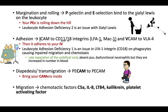That's for margination and rolling. Your pee is for P-selectin and E-selectin. So the P and E selectins bind to sialyl Lewis X on the leukocyte. If you remember that it pees down the hill for P-selectin and E-selectin, that also helps you remember that this first step — margination and rolling down the hill — is involved in leukocyte adhesion deficiency type 2, where they have a problem with their sialyl Lewis acid on the leukocyte.